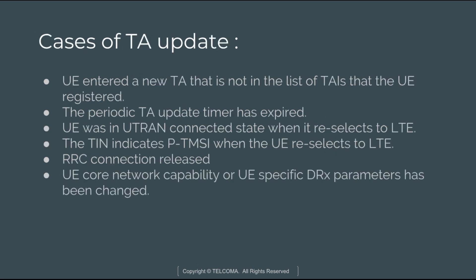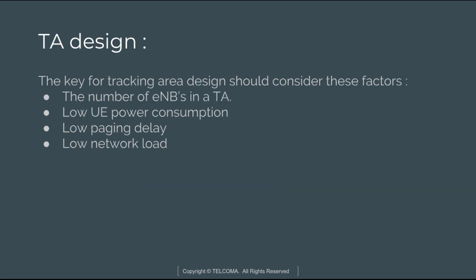A Tracking Area Identifier list can contain 1 to 16 tracking areas. The causes for a tracking area update include: whenever a UE enters a new tracking area not in its registered list of tracking area identifiers; whenever the periodic tracking area update timer has expired; when the UE reselects to LTE and the RRC connection is released; or when UE core network capability or UE-specific DRX parameters have changed.